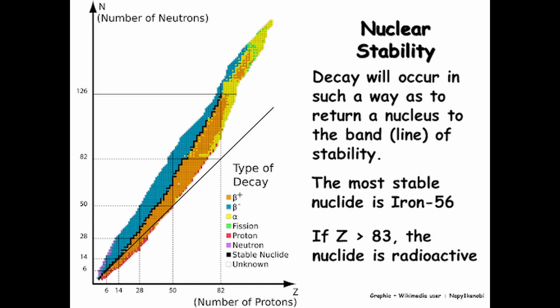And what beta minus decay means is that you're going to have a neutron in the nucleus, and it's going to emit an electron and an anti-electron neutrino. And by doing that, by losing that negative charge, it's going to become a proton. And suddenly you have another proton in this atom, and the atom goes up from whatever it was to the next atom. That's how neutrons can change an element's identity.